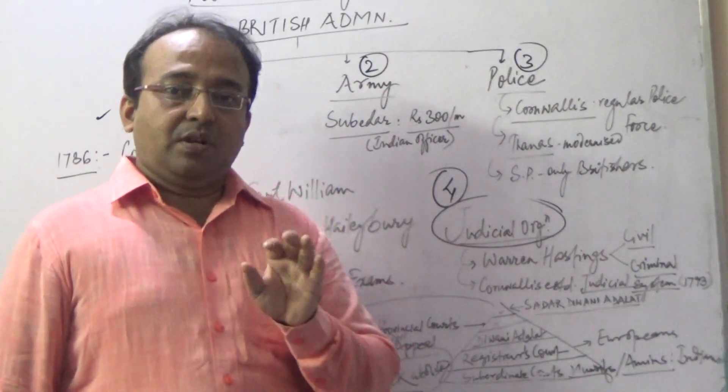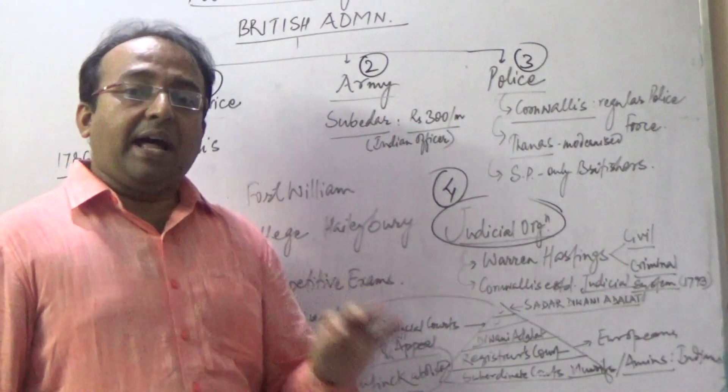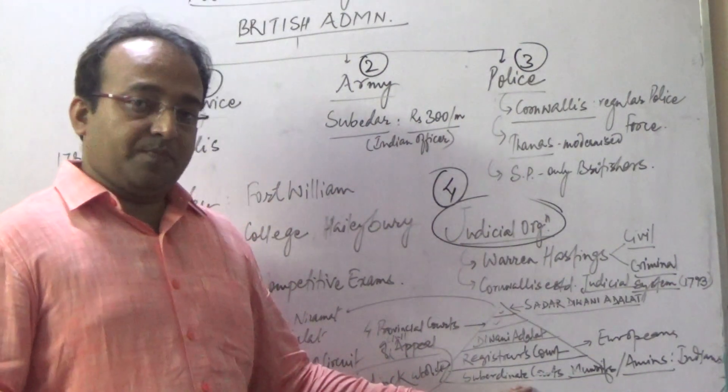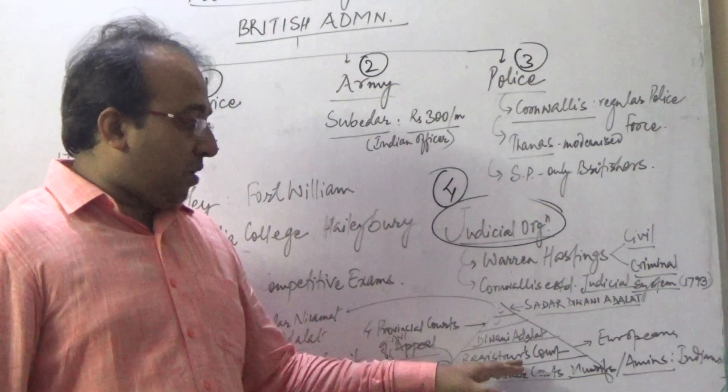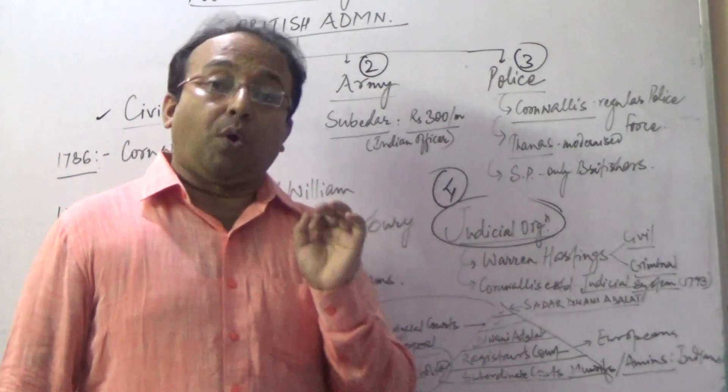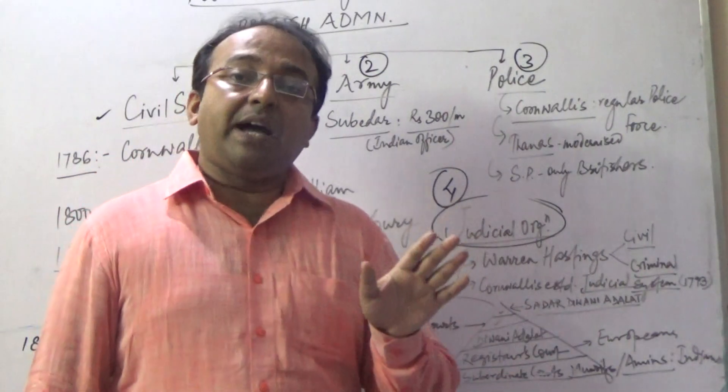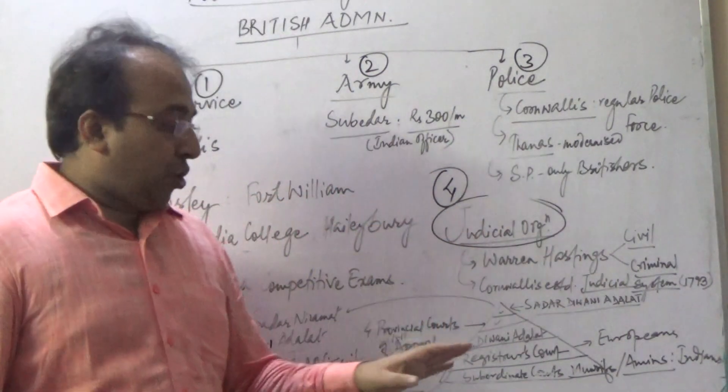These munsif and amiens were Indians, so there were local people hired for this particular purpose in the subordinate courts. Just above the subordinate courts, there was a registrar court. The registrar court was always manned by the Europeans.